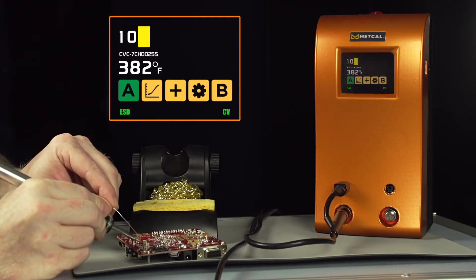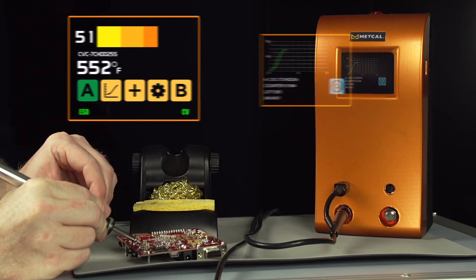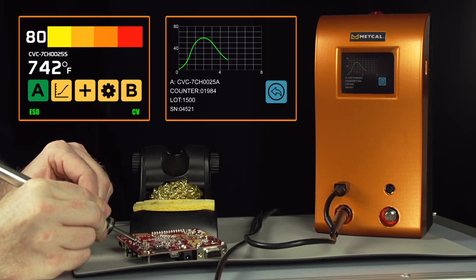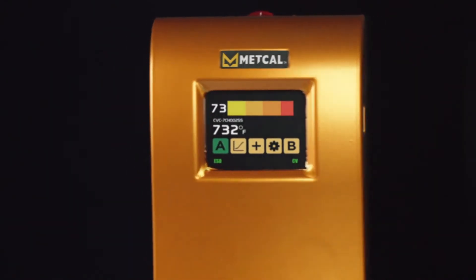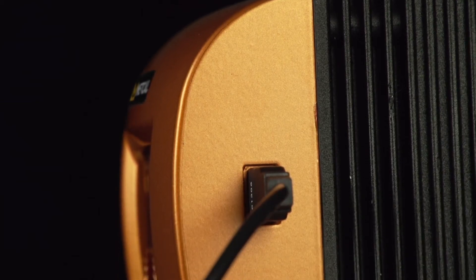Metcal's new power supply incorporates a large-color touchscreen with bold graphics, power meter, tip temperature display, password interface, and power curve display. The displayed information can be accessed via a communication port for analysis.